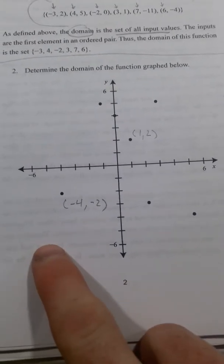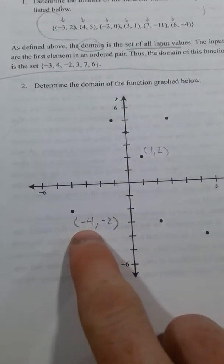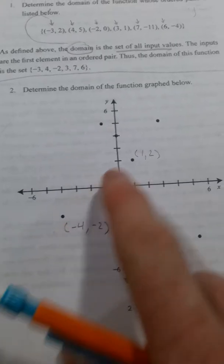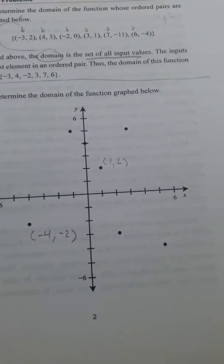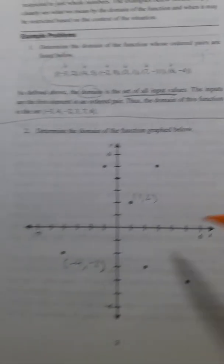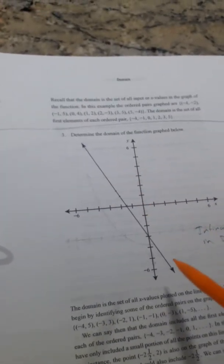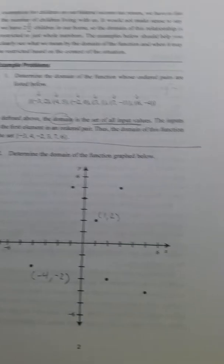So once I list out all of these points with the ordered pair, I take the first number of each of them, and that is my domain. That's what all the input values could be. Notice how it's not like a straight line. It's not like this. It's just like a bunch of dots.